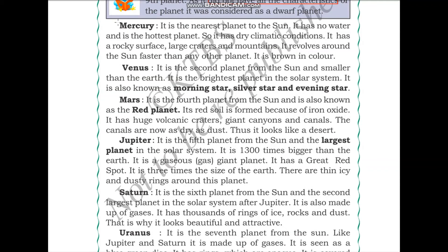Mercury is the nearest planet to the sun. It has no water and is considered the hottest planet, with dry climatic conditions, a rocky surface, large craters, and mountains. It revolves around the sun faster than any other planet because its orbit is very small — it is brown in color.